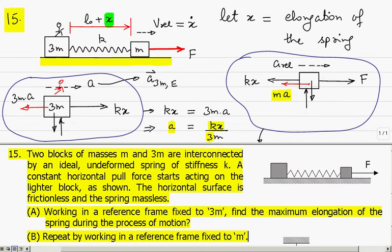In part B we are asked to repeat the same problem by working in the reference frame fixed to M. The answer must be the same: 3F/2K. In part B, you attach the observer to the smaller block, assume its acceleration to be A, draw the free body diagram of the bigger block showing the pseudo force, and work similarly using the chain rule with V_rel equal to X-dot.